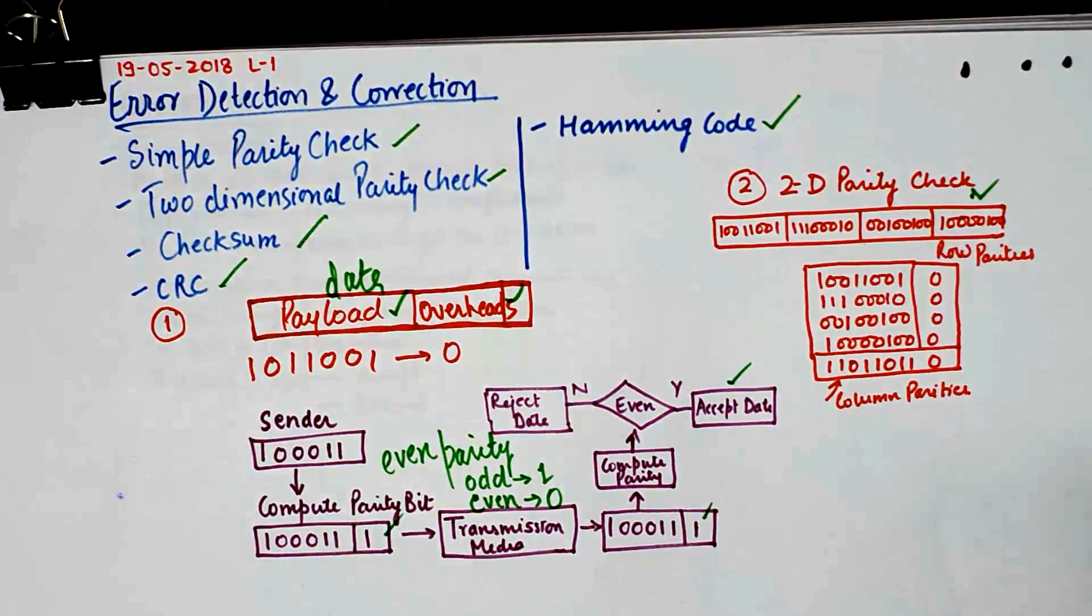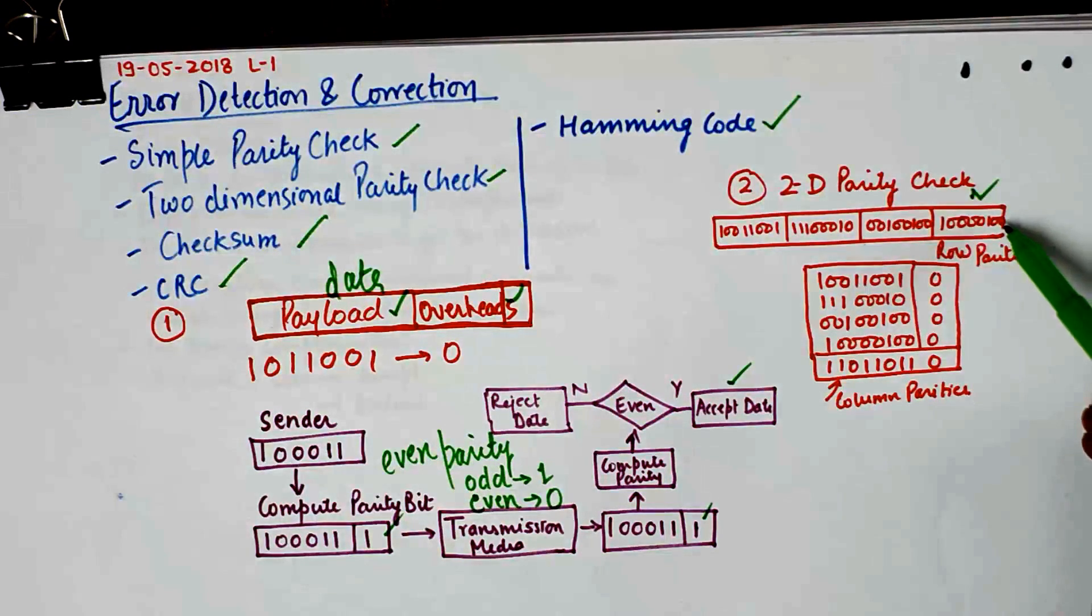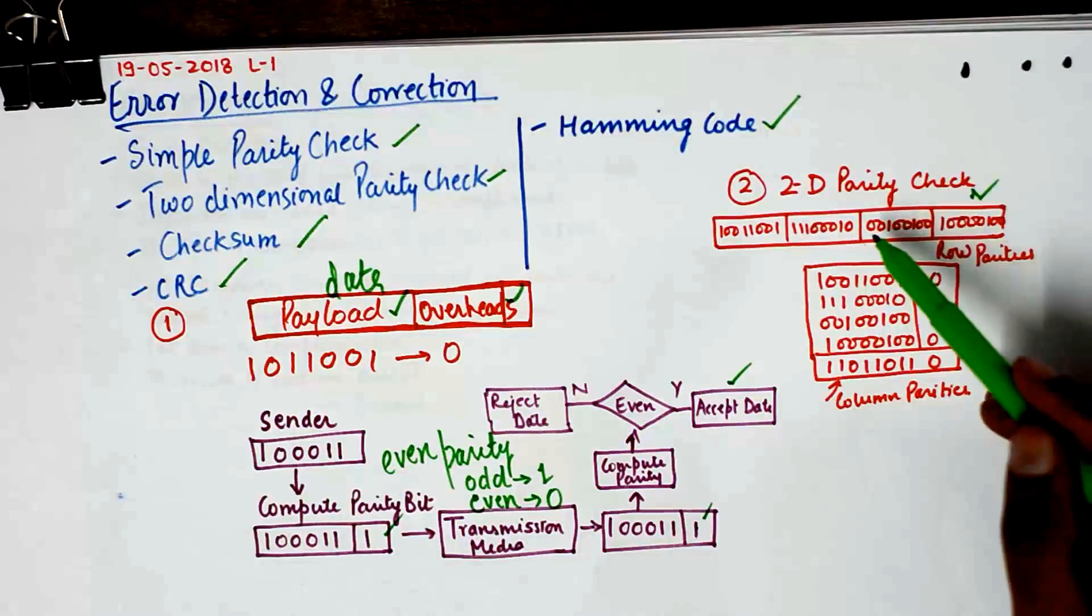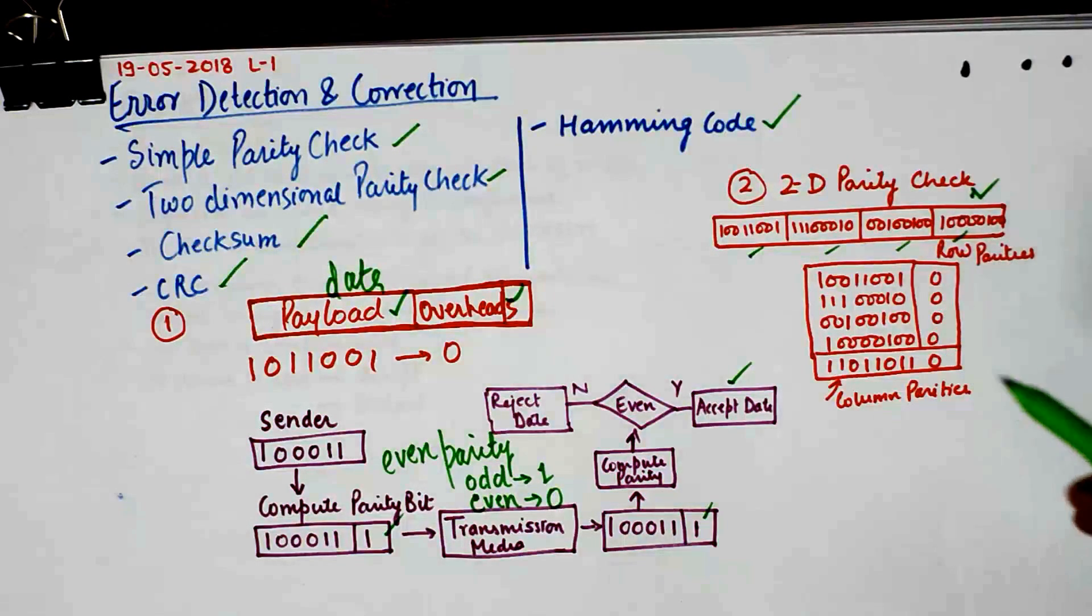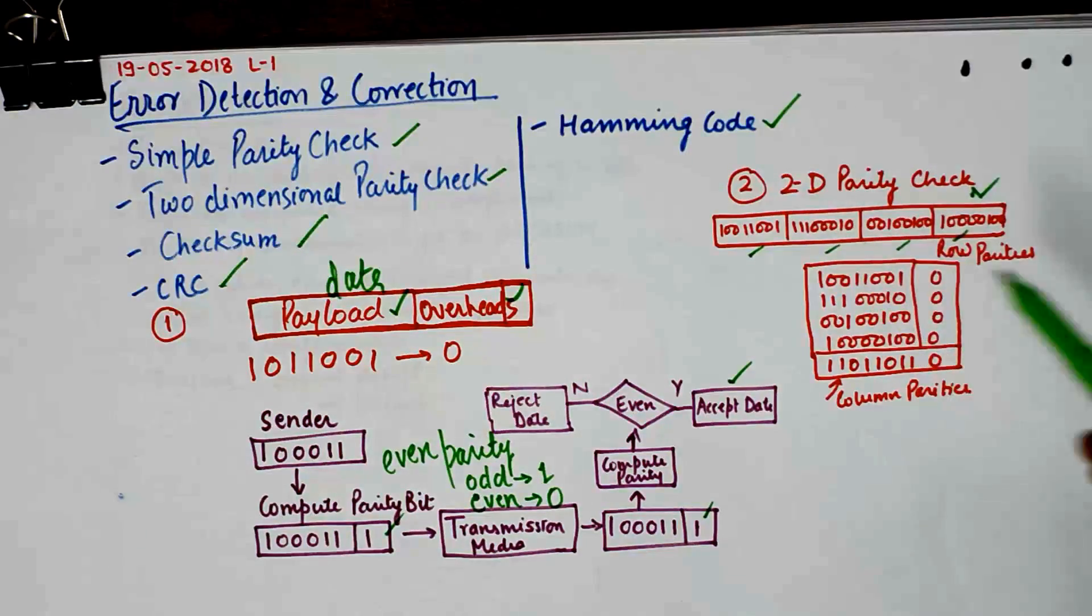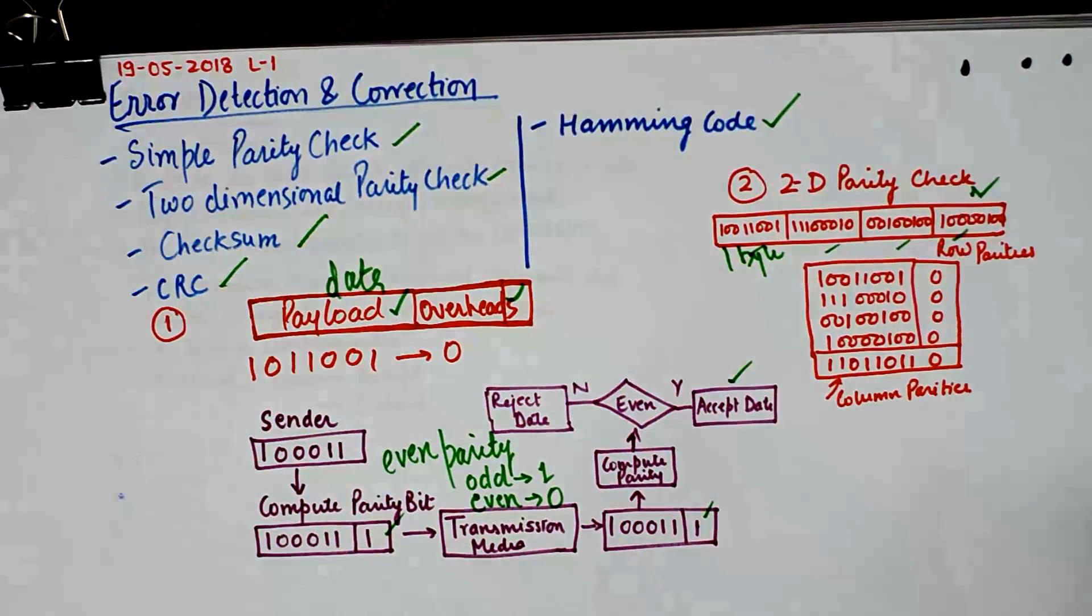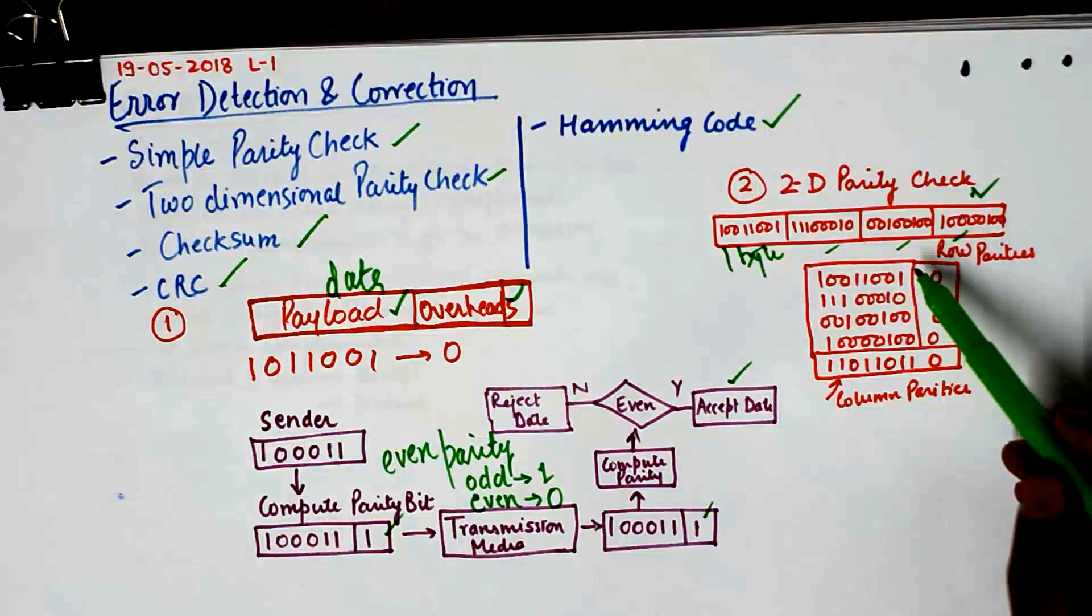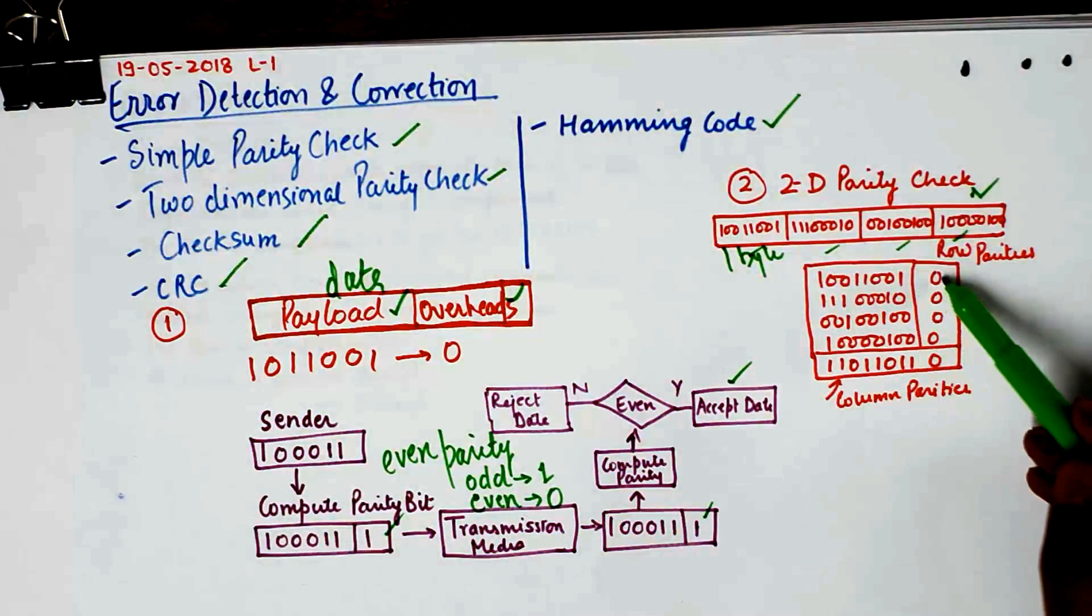In 2D parity check, let us assume we wish to send a few groups of data bits. Now the reason I am saying they are groups because the length of these data bits is not necessarily taken as 8 bit. You can vary that also. But for the sake of simplicity I have chosen these data bits to be 1 byte each.